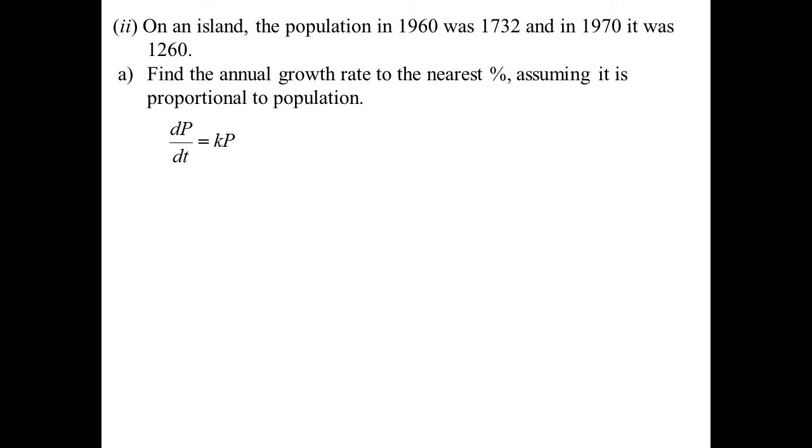Assuming that it is proportional to population. So dP/dt is kP. We're assuming that's true. At this stage, we can say, well, I know the solution to that differential equation will be P equals Ae^(kt). Initial population is 1,732. So therefore, I could now rewrite that as 1,732e^(kt). Now, the other piece of information is when t equals 10, so 10 years later, the population is 1,260.